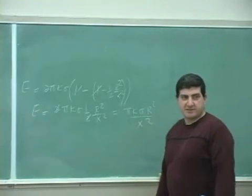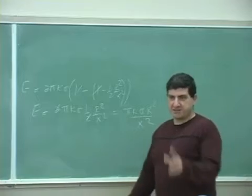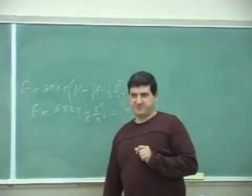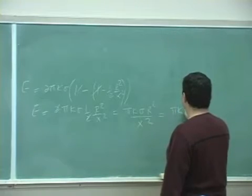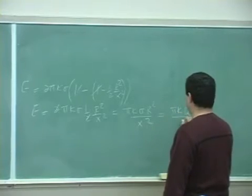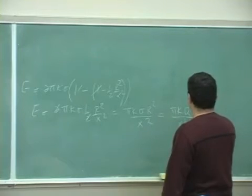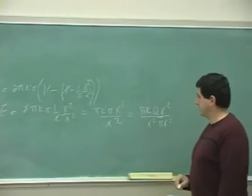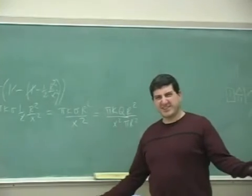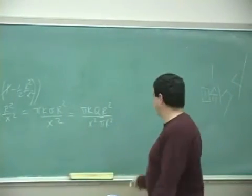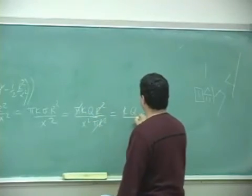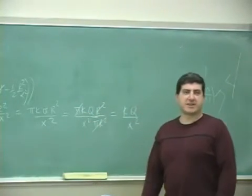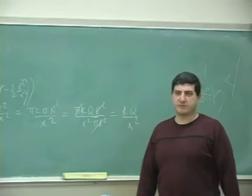Sigma is what? The charge of the disk over its area. Charge over area. So good, huh? K q over x squared. That's the electric field of a point charge.